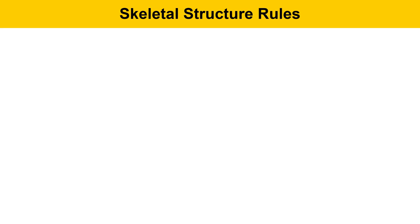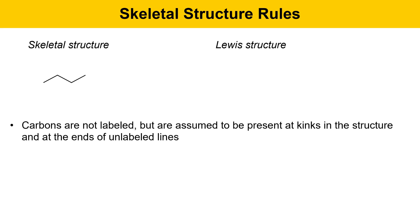There are a number of rules for skeletal structures. Here's an example of a simple skeletal structure, and we'll learn how to convert it into a Lewis structure. The first rule is that carbons are not labeled, but they're assumed to be present at kinks in the structure and at the ends of unlabeled lines. Here's an example of where carbons occur in the skeletal structure on the left, indicated by the pink ovals. If we draw that in Lewis structure format, we're going to draw in the carbon atoms with bonds between them.